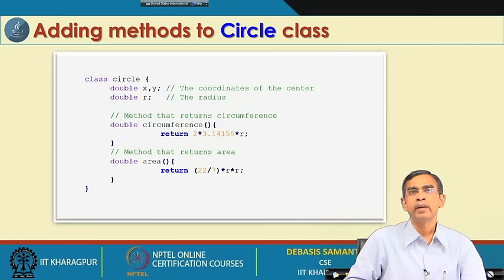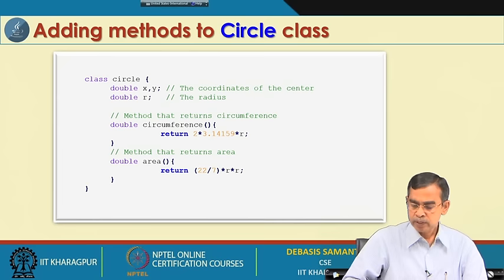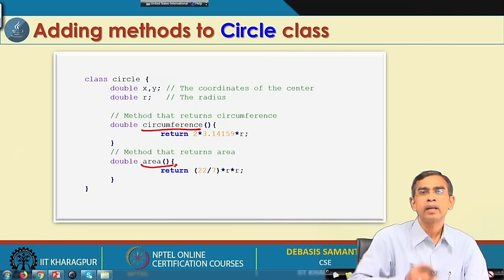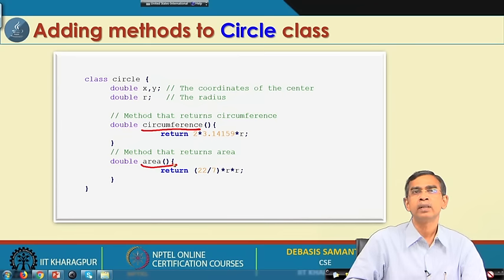The circle class has been augmented with two methods: one called 'circumference' and another called 'area'. These are two operations which, given the radius, will calculate the circumference of the circle using the standard formula and the area of the circle using the standard formula. In this case, R is in use, while x and y are not yet used — we can plan other methods to utilize x and y as well. So this class has three fields x, y, r and two methods: circumference and area.